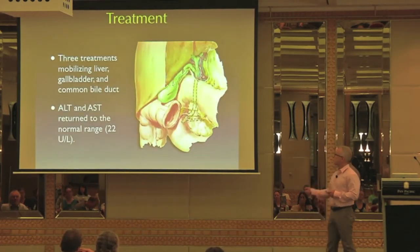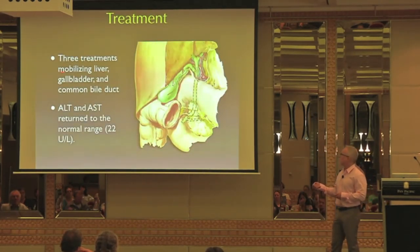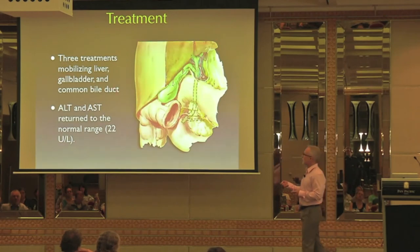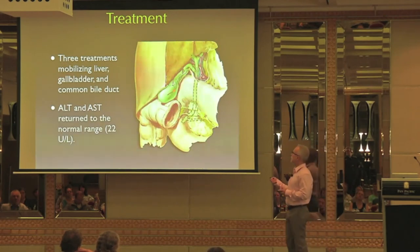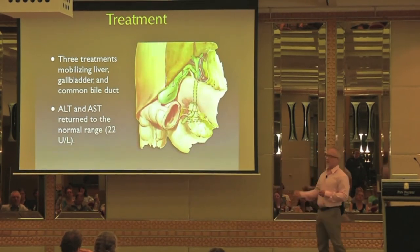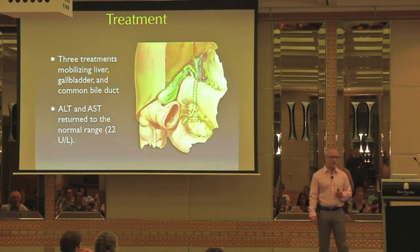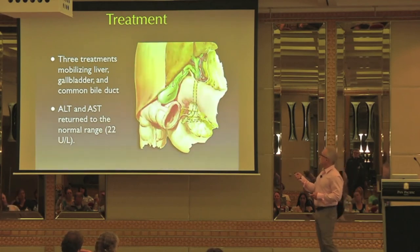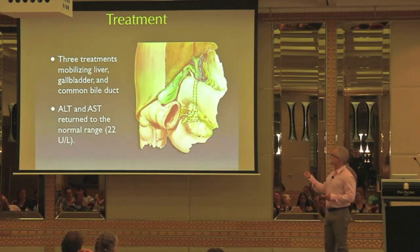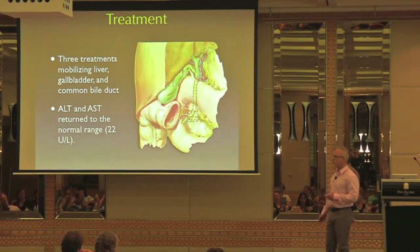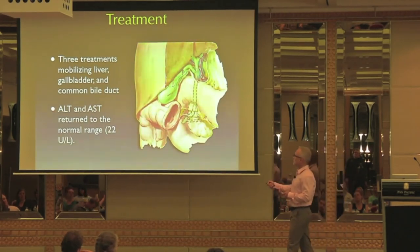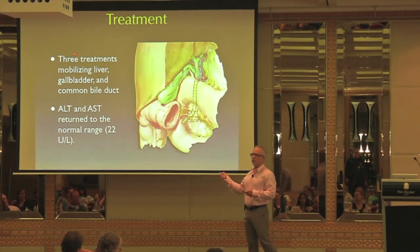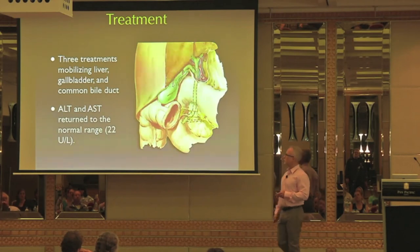She comes to see me. She had three treatments. I mobilized her liver, her gallbladder, and the common bile duct. She had a restriction in her liver, obviously, because of the fatty liver disease — it was quite immobile. She also had a lot of tension around the cystic duct, which I thought was interesting. Her ALT and AST returned to normal after three treatments — returned to 22 units per liter.